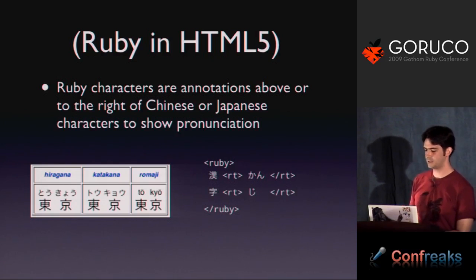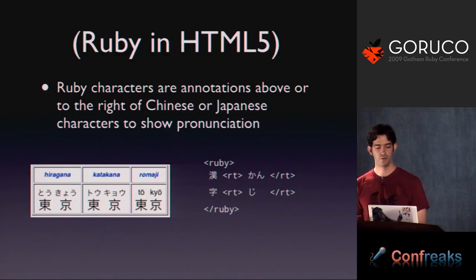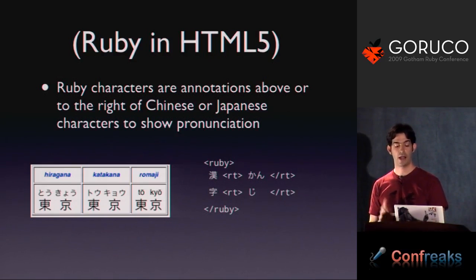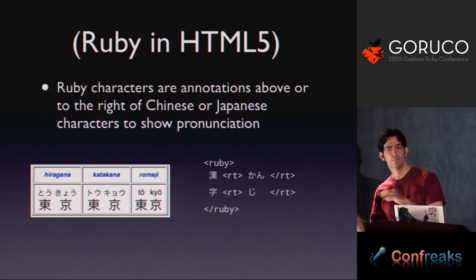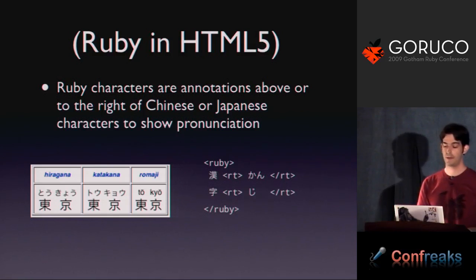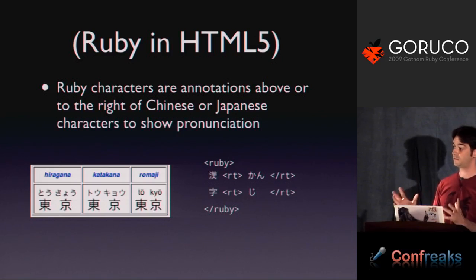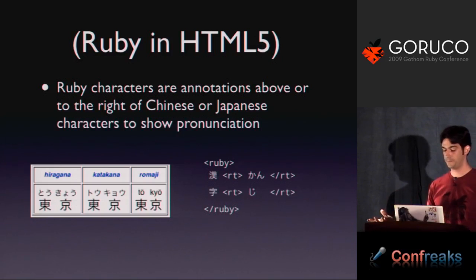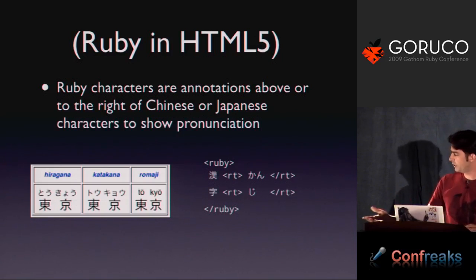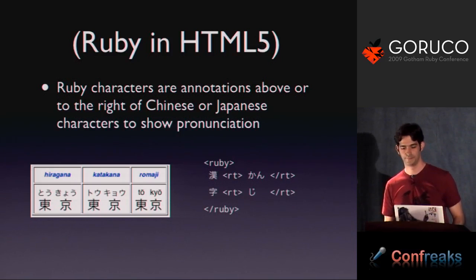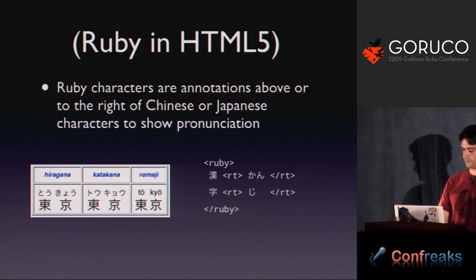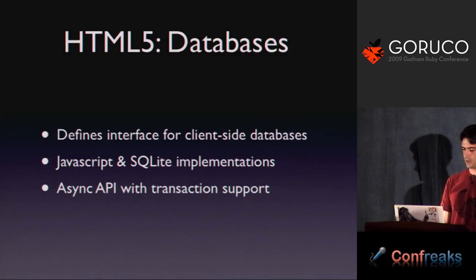A quick parenthetical aside, since I know you want to see some Ruby: Ruby characters are annotations — a concept completely unrelated to programming that shows pronunciation for Chinese or Japanese characters. There's going to be a Ruby tag in HTML that lets you specify these pronunciations inline. So there's your Ruby.